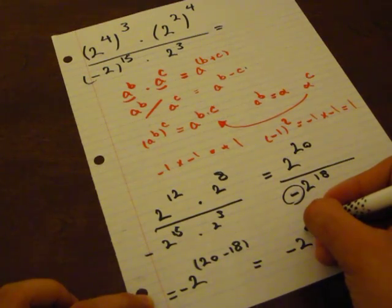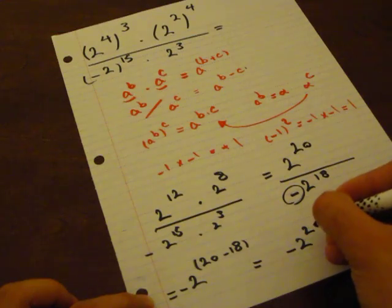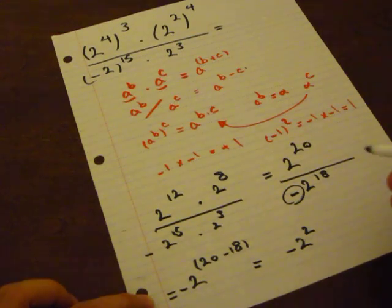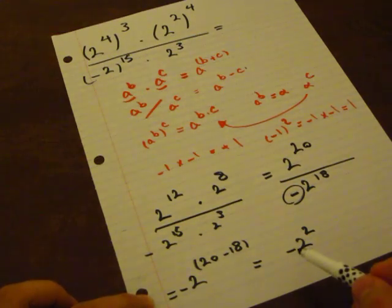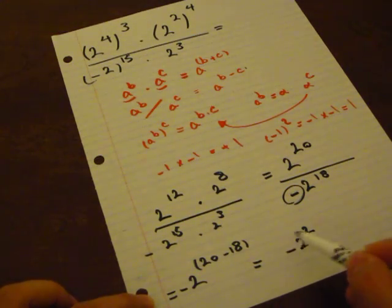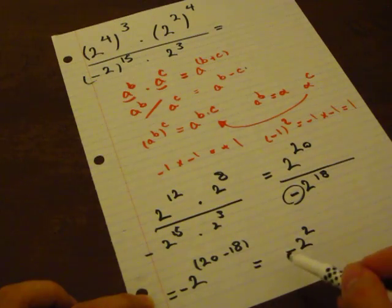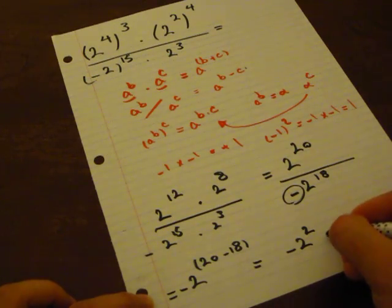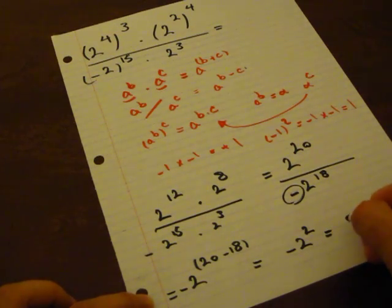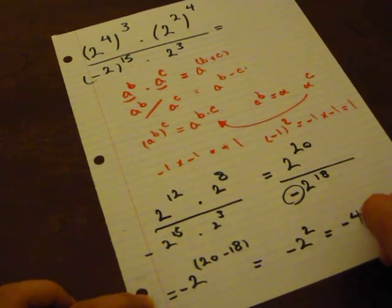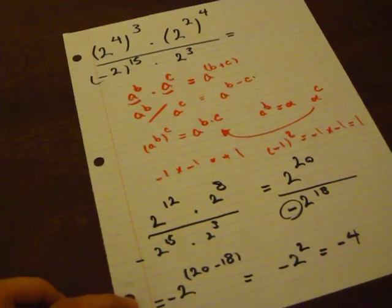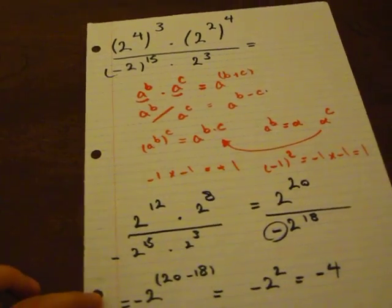This gives me negative 2 to the power of 2. Pay attention — this negative is not inside the parentheses, so it stays. Which is equal to negative 4. That's my final answer.